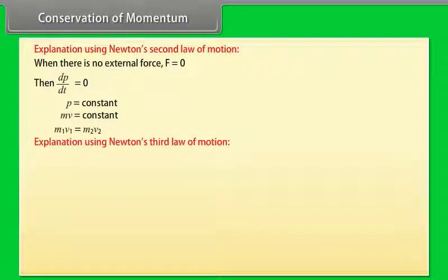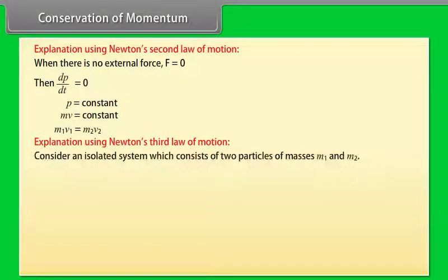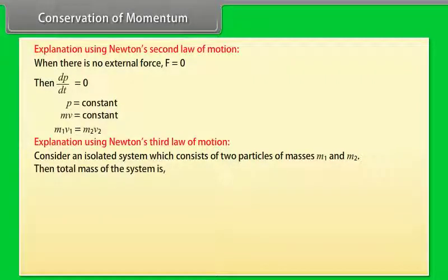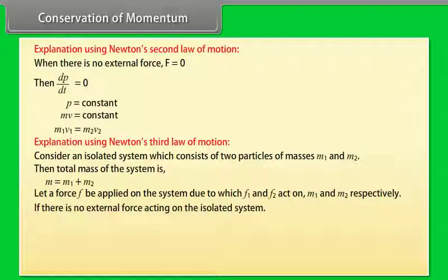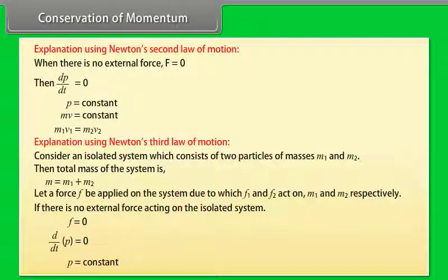Using Newton's third law: Consider an isolated system of two particles with masses M1 and M2, so total mass M = M1 + M2. Let force F be applied on the system, causing F1 and F2 to act on M1 and M2 respectively. If there is no external force, F = 0, and d/dt(P) = 0, so P = constant. Hence the law of conservation of linear momentum is proved.